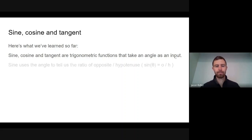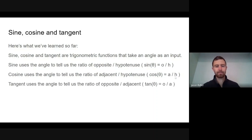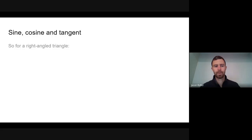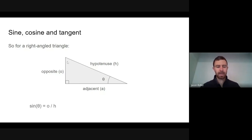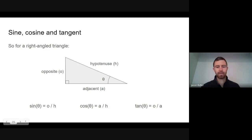Our three trigonometric functions are sine, cosine, and tangent, all using the angle to tell us ratios of sides. Sine of the angle equals O over H — opposite over hypotenuse. Cosine of the angle equals A over H — adjacent over hypotenuse. Tangent of the angle equals O over A — opposite over adjacent. For any right-angled triangle with an angle, an opposite side, an adjacent side, and a hypotenuse, these three ratios summarize the basic trigonometry.